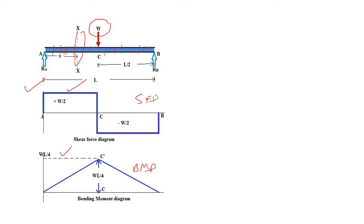I'm not going into detail about how to draw the shear force diagram and bending moment diagram — I'm assuming you are well aware of this. So, you have a simply supported beam with an external load, and you have calculated the bending moment diagram as well as the shear force diagram. Now let's say you are using a wide flange section or I-section as your beam member.